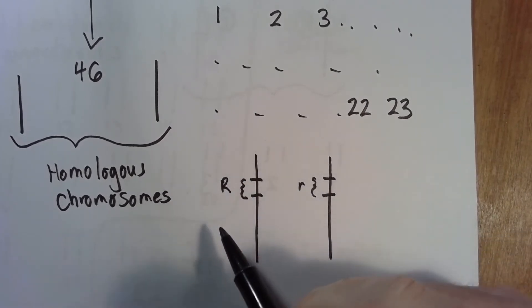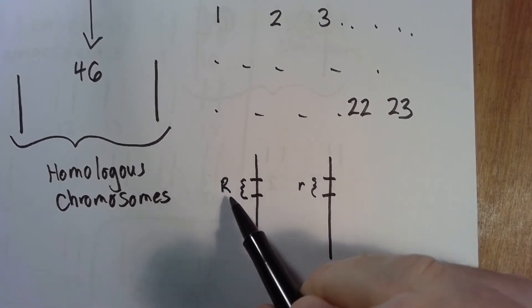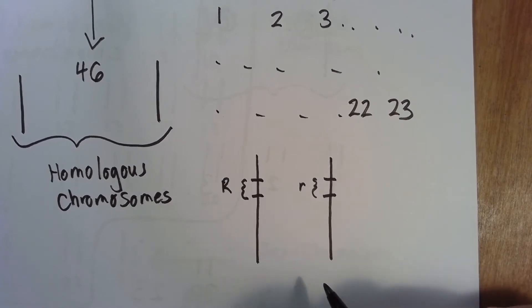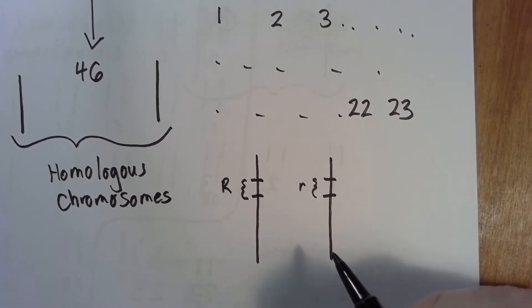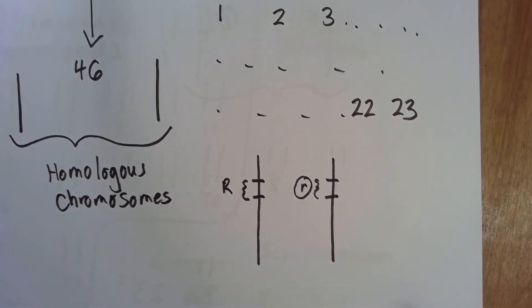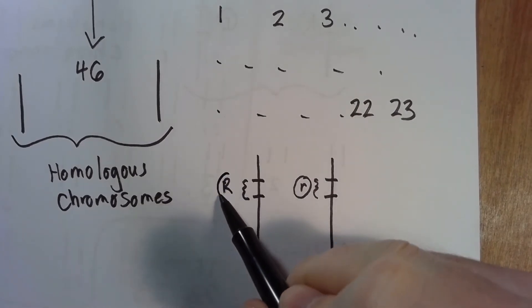If, for example, you have a healthy gene and this one right here is some kind of disease, we would say the disease is a recessive disease, or carried on a recessive allele. So this would be recessive. If, for example, the trait is carried on the dominant allele, we would just call it dominant.